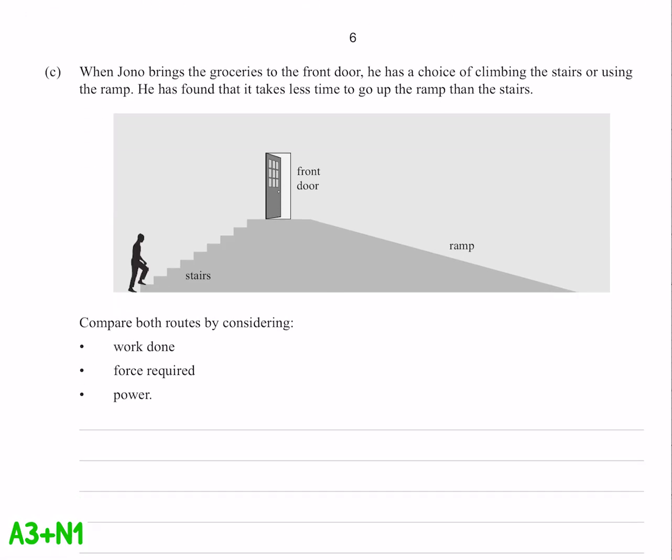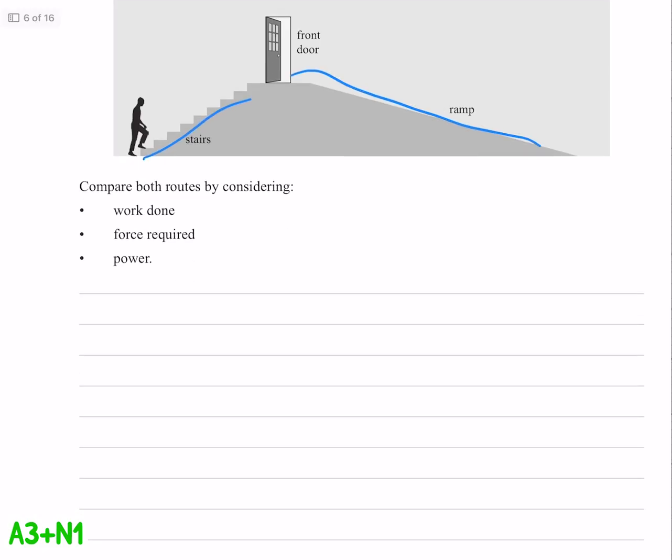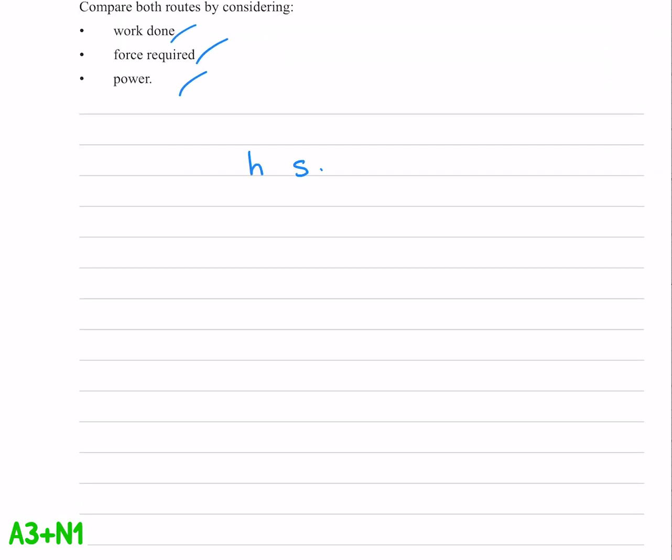When Jono brings the groceries to the front door, he's either climbing the stairs or using the ramp. Compare both routes by considering these three things. The height is the same, so the work is the same, and the ramp is longer, so the force is less.